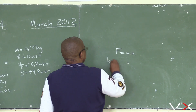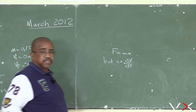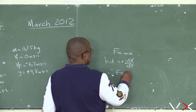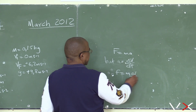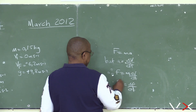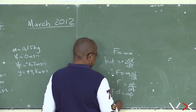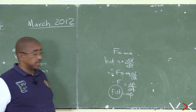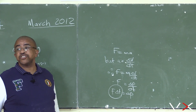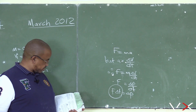F equals ma, but acceleration is delta v over delta t — acceleration is the rate at which velocity changes. So F times delta t is equal to the change in momentum. The impulse is the same as the change in momentum. So you can define impulse as a change in momentum.